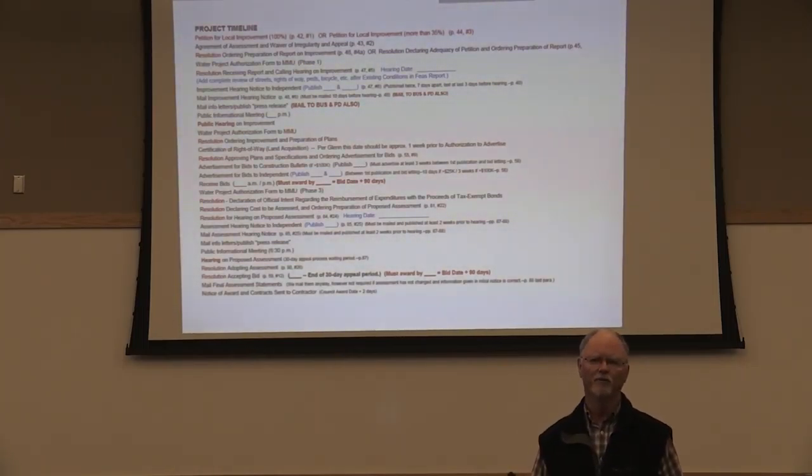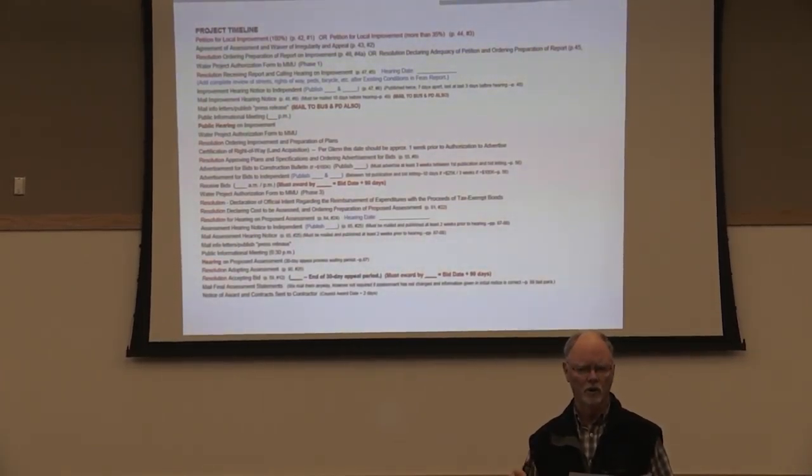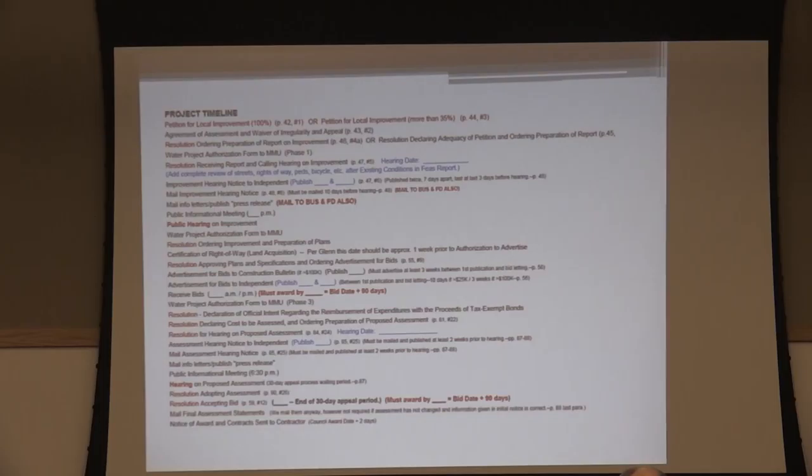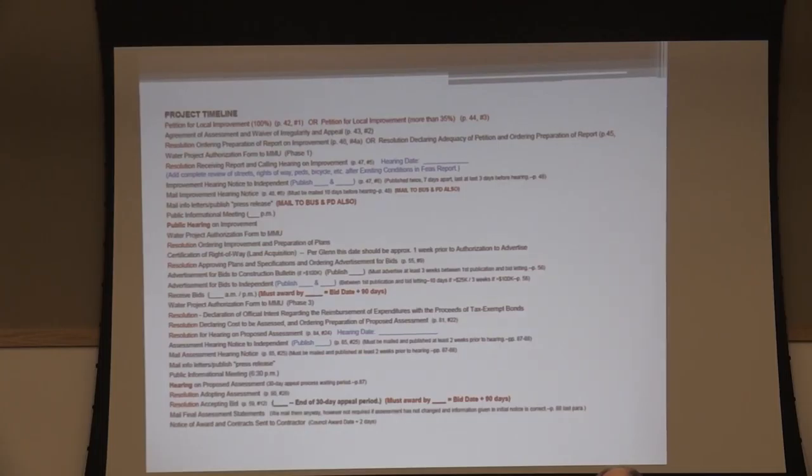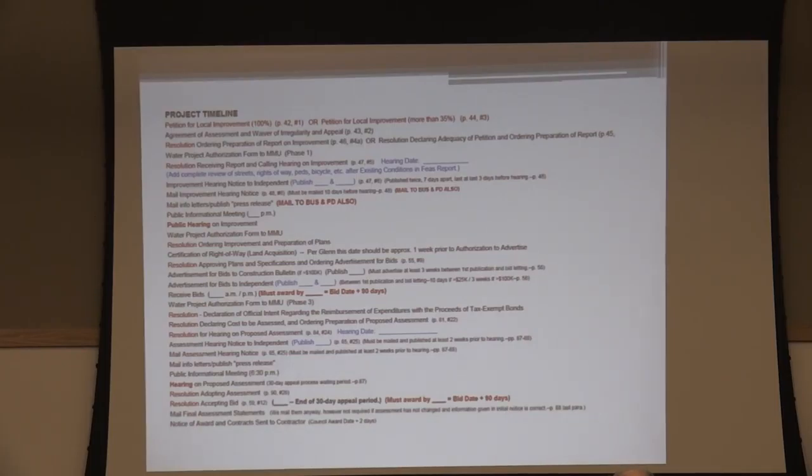We then send the authorization form back to Marshall Municipal Utilities for final project development and associated potential costs. The City Council has a resolution ordering the improvement and preparation of the plans. If we don't have all the right-of-way necessary, we'll acquire it, though it's seldom needed. At the next council meeting, there's a resolution approving the plans and specifications and ordering the advertisement for bids.